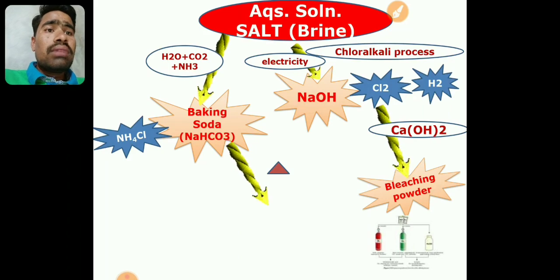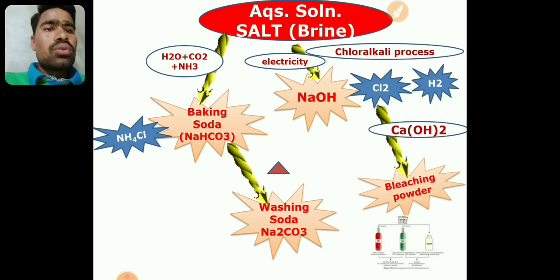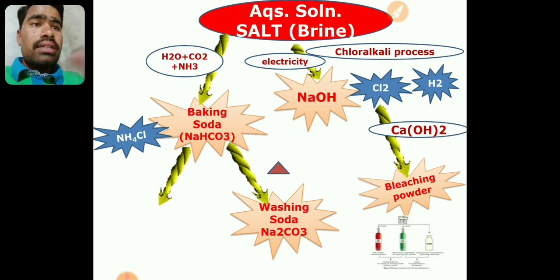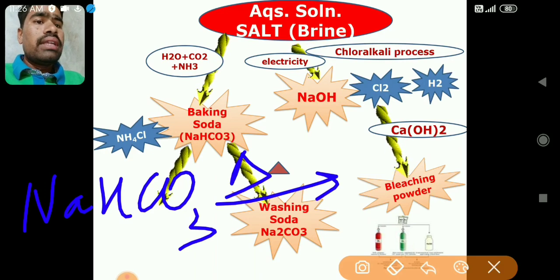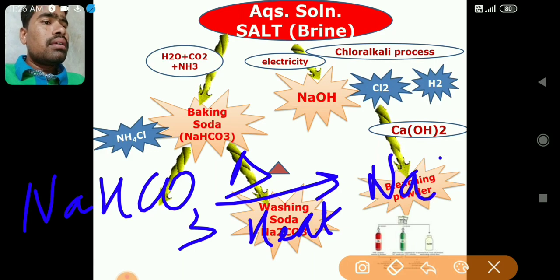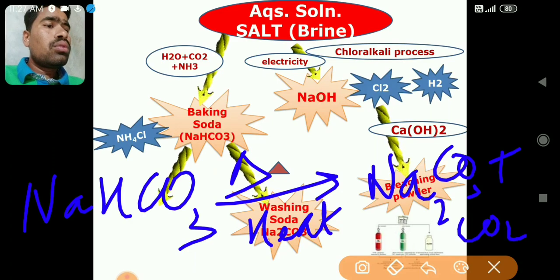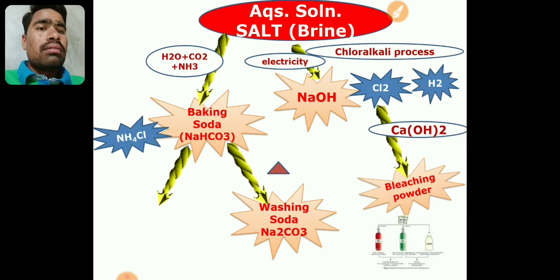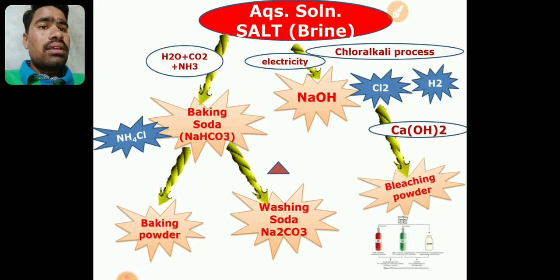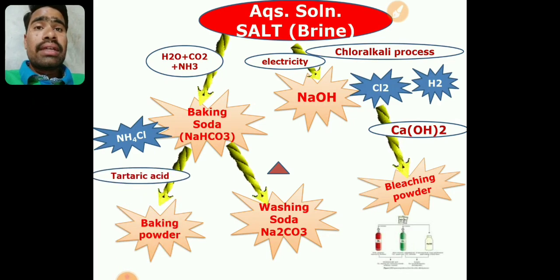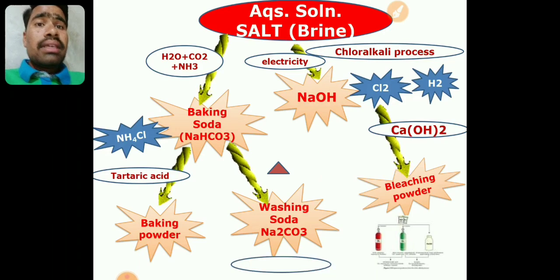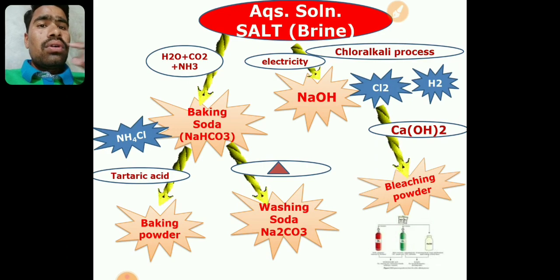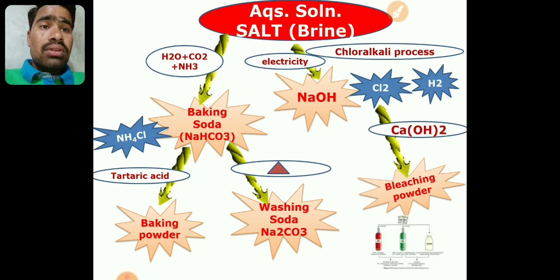There is one more product that can be formed from baking soda: washing soda. If you decompose baking soda by heating it — NaHCO3 when heated — it forms Na2CO3 (sodium carbonate), plus CO2 and H2O. From Na2CO3, which is washing soda, we can also form baking powder by adding tartaric acid. Tartaric acid is the edible acid present in tamarind. In cake making, we use baking powder rather than baking soda directly.